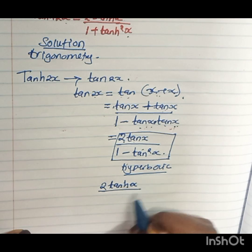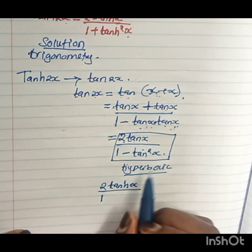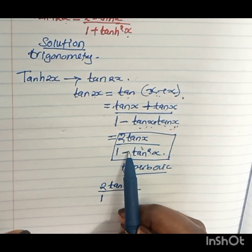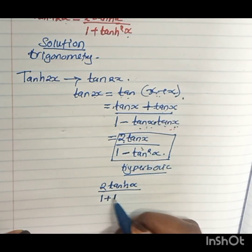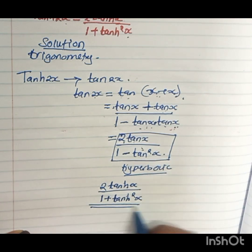Divided by 1... and another thing from Osborne's rule: if I'm converting this answer to hyperbolic, I need to change the sign here. So I'm going to change this minus to plus. I'll have tanh squared x. So this is the answer when I work out tanh 2x from trigonometry.